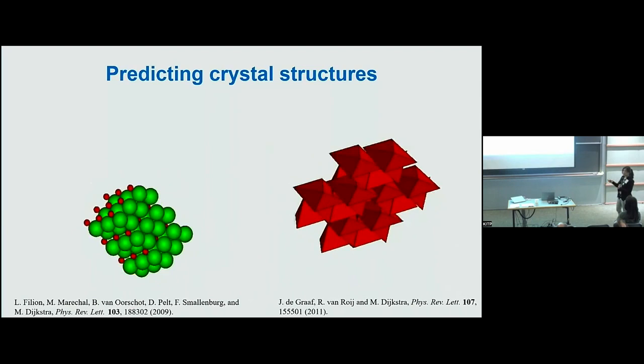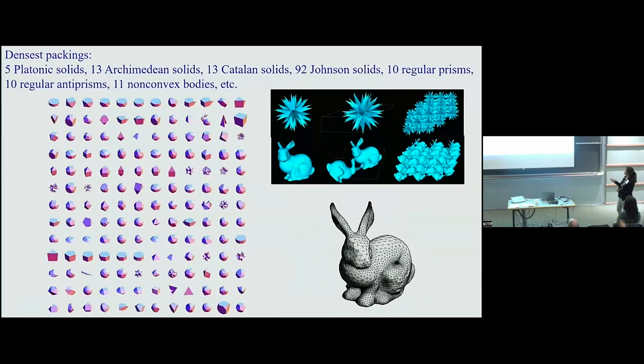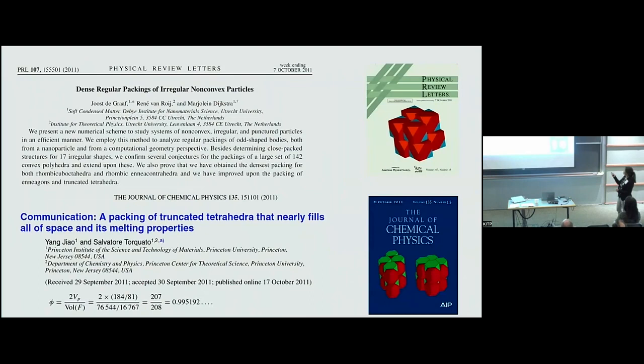By gradually increasing the pressure you can get the densest packing structure; by decreasing temperature in steps you get the ground state structures. Since we are working with hard particle systems, we gradually increase the pressure to infinite pressure. We did this for many different particle shapes: the Platonic solids, Archimedean solids, Catalan solids, Johnson solids, regular prisms, antiprisms, and several non-convex bodies including the Stanford Bunny, which consists of thousands of triangles, as a proof of principle. I want to focus on one particular shape — the truncated tetrahedra.